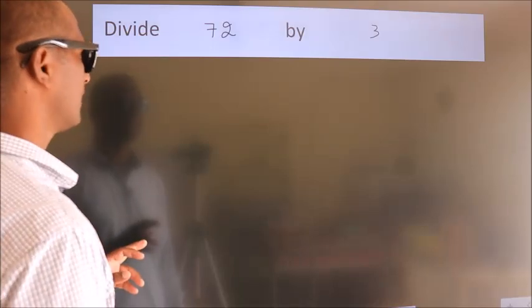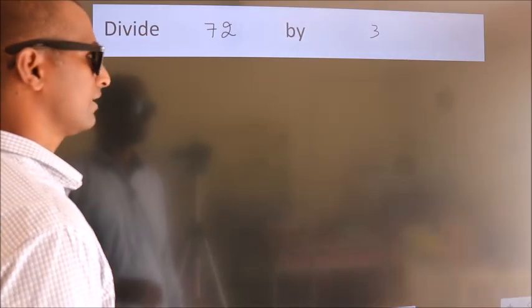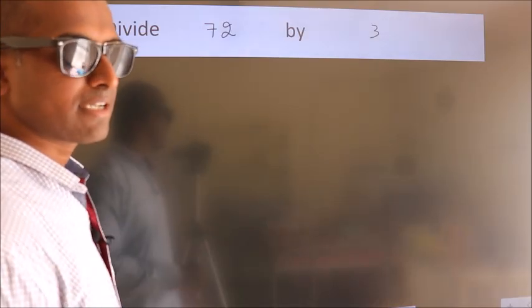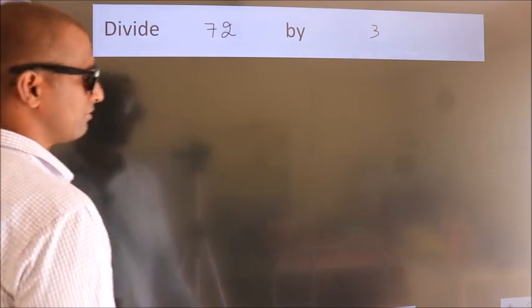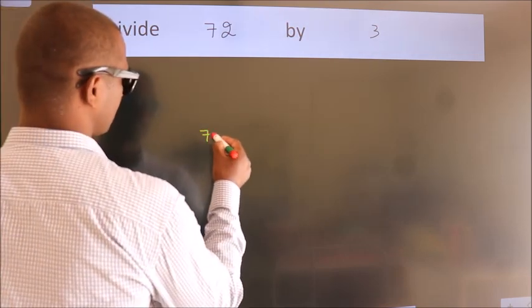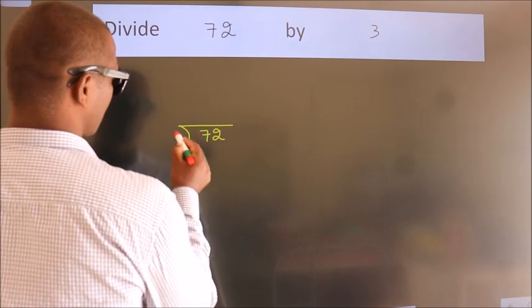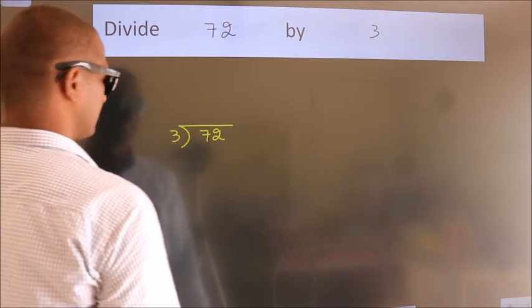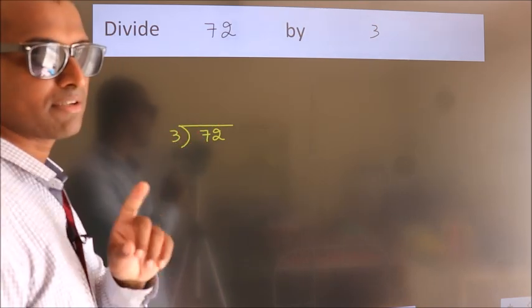Divide 72 by 3. To do this division, we should frame it in this way: 72 here, 3 here. This is your step 1.